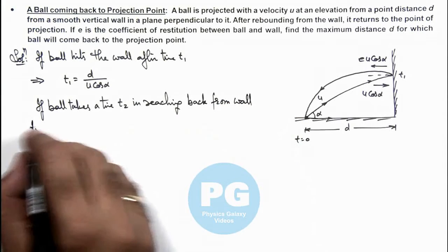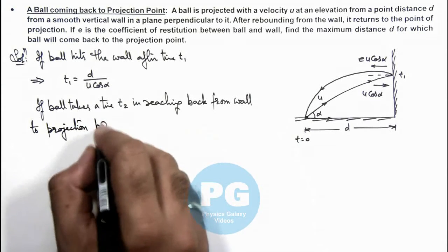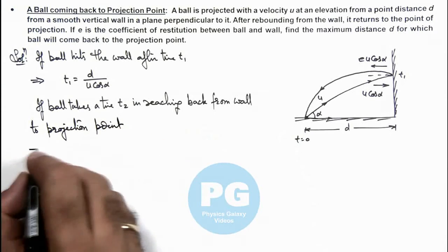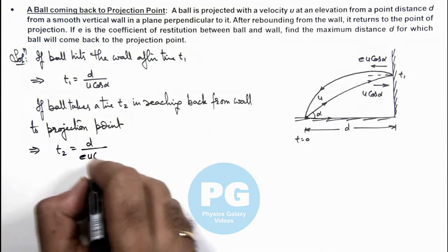projection point, then here we can write the value of t₂ would be equal to d by e·u·cos alpha.